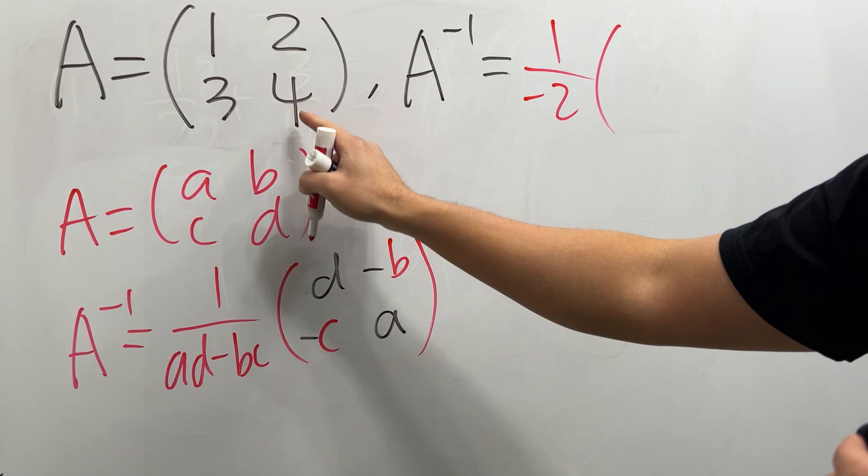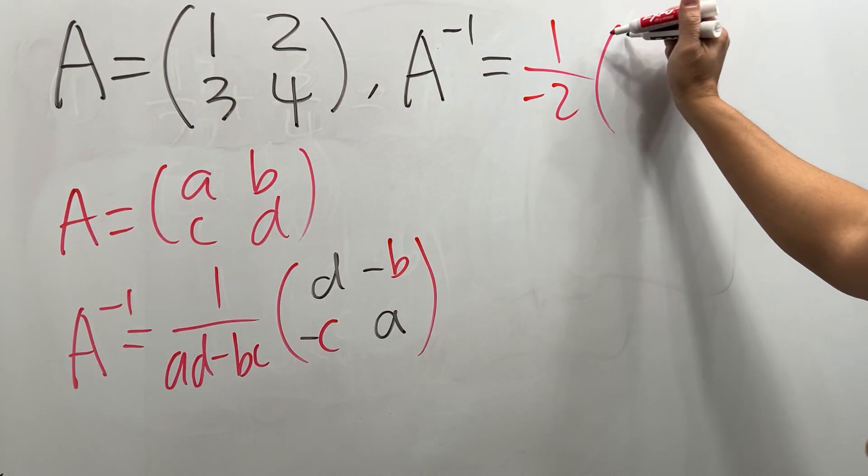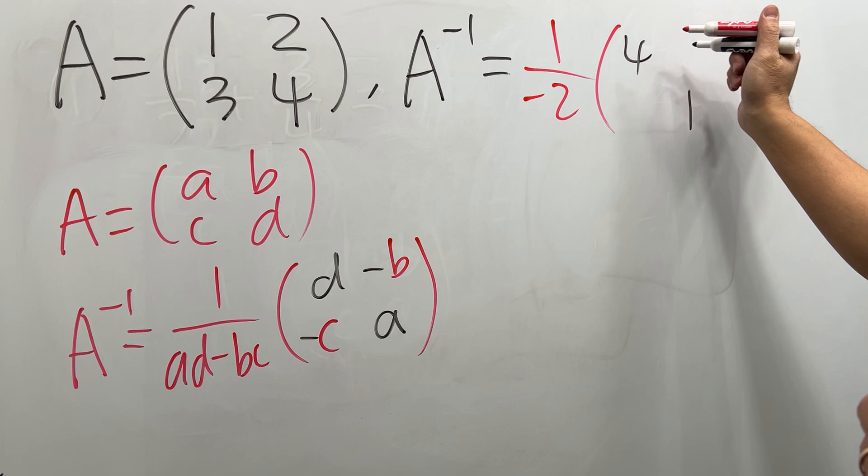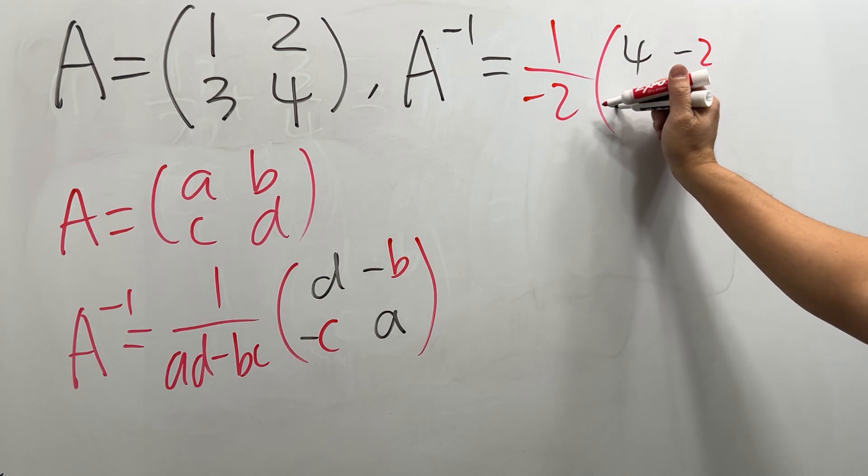And then let's go ahead and switch this and that. So we have 4 going here and then 1 going here, and then make this and that negative. So we have negative 2 and then also negative 3.